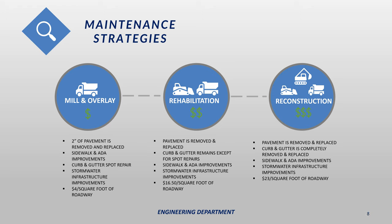The next type of project is a rehab, where we replace the entire pavement section but leave the curb and gutter largely in place. We do spot repairs on the curb and gutter and make ADA updates and storm sewer improvements as well. This project is more involved than a mill and overlay and costs about $17 per square foot of roadway. A reconstruction is where we completely remove and replace the pavement and the curb and gutter. This is the most complex type of project we do, typically costing about $23 a square foot — about six times what a mill and overlay costs.